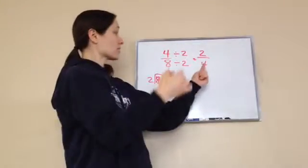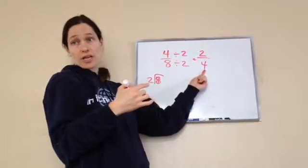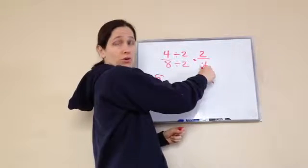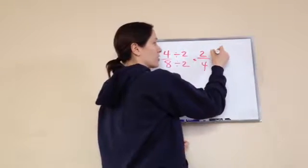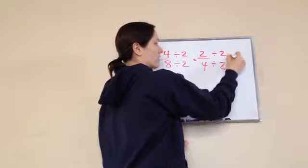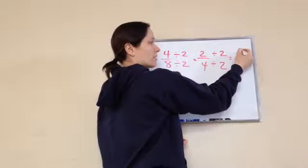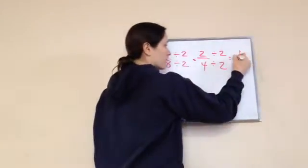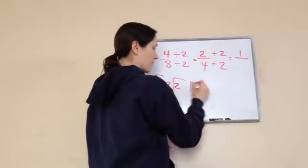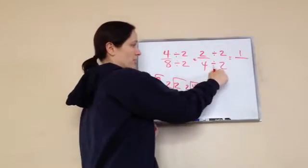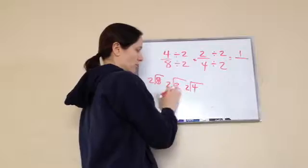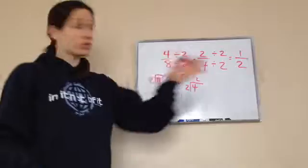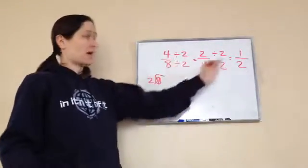Will that reduce? We have to keep making it until we get the smallest amount of cuts of our pie. Can 2 and 4 divide by 2? Yes. 2 divided by 2 is 1. 4 divided by 2 is 2. We finally got it to what you were saying. And you did it all in your head. This is the mathematical way of doing it.